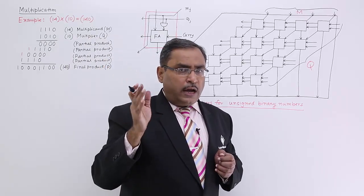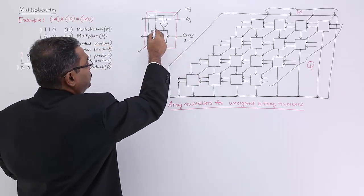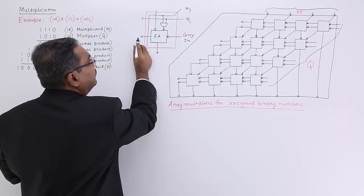Do you know that how many bits are there in the full adder as input? 3 bits. So 3 bits will be the inputs and 2 output bits will be there. One will be the sum and one is the carry.